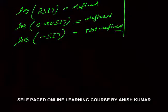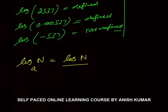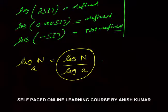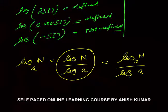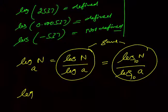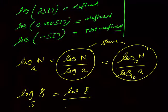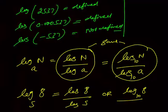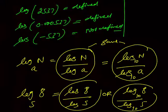The first concept after the basic definition is that log of n to the base a can always be written as log(n) / log(a). This is a very important concept. If the base is not mentioned, it automatically means the base is 10. So log n to the base a equals log(n) to base 10 divided by log(a) to base 10. For example, log of 8 to the base 5 can be written as log(8) / log(5). If you want to write the base, it's your choice — otherwise you can write without it. If nothing is mentioned, the base is 10.